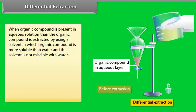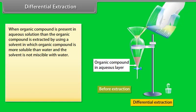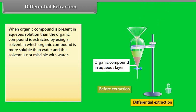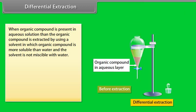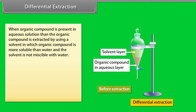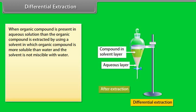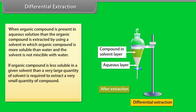Differential extraction: When an organic compound is present in aqueous solution, it is extracted using a solvent in which the organic compound is more soluble than water, and which is not miscible with water. If the organic compound is less soluble in a given solvent, a very large quantity of solvent is required to extract a very small quantity of the compound. This technique is known as continuous extraction.